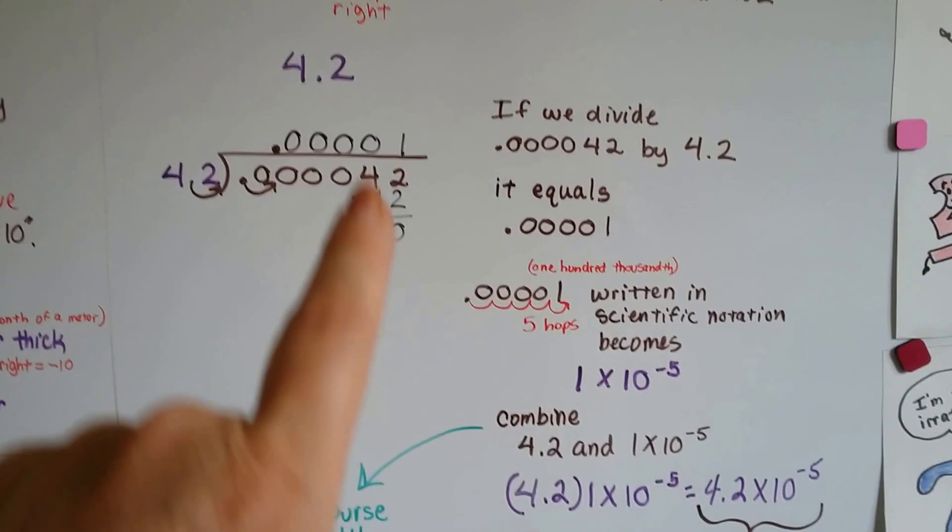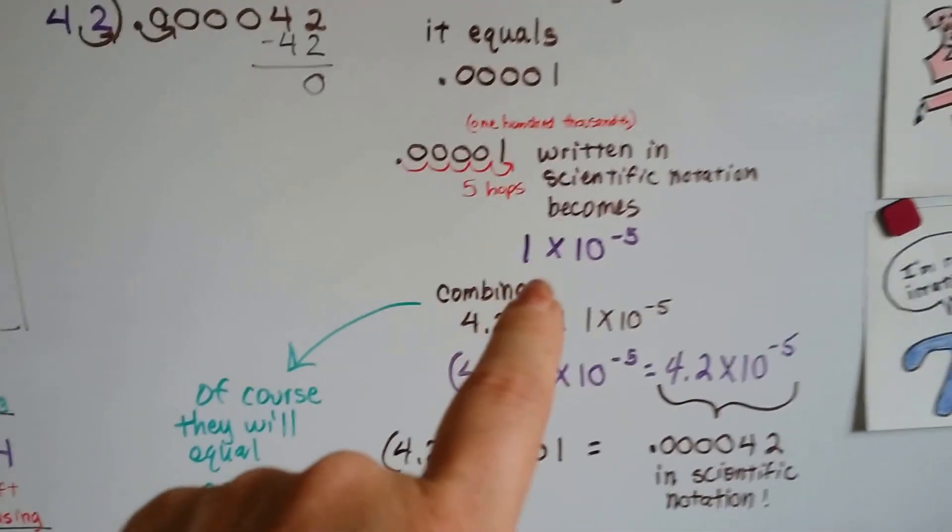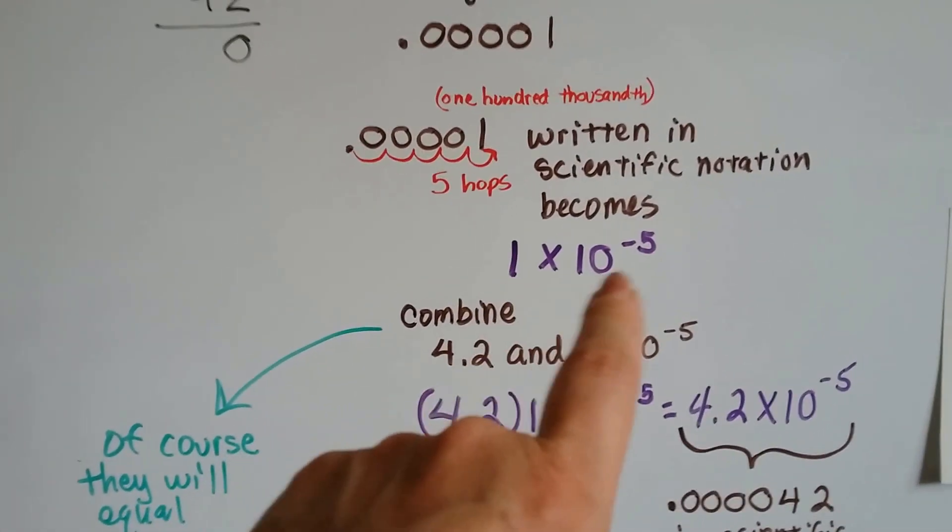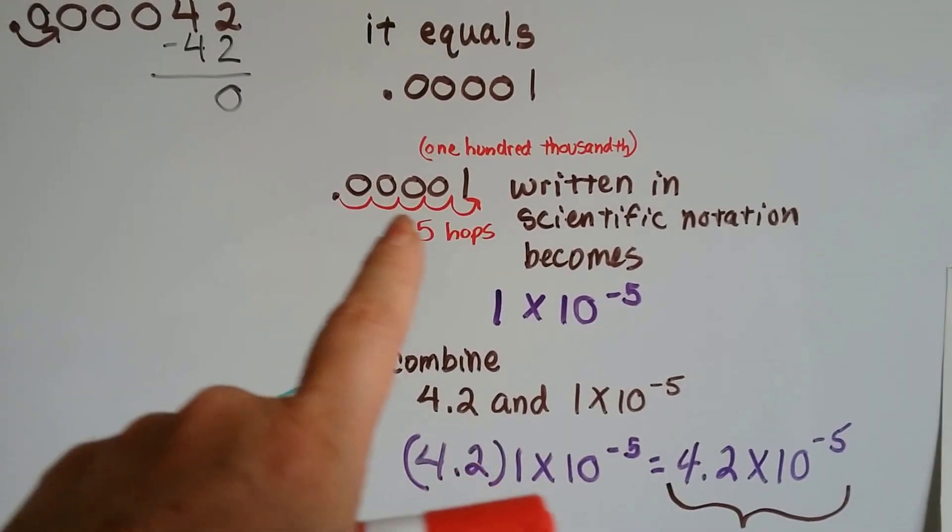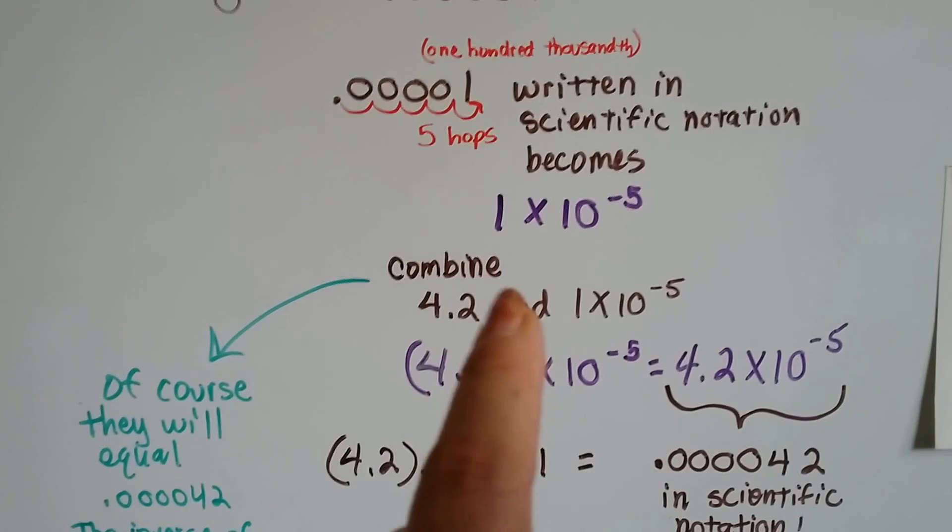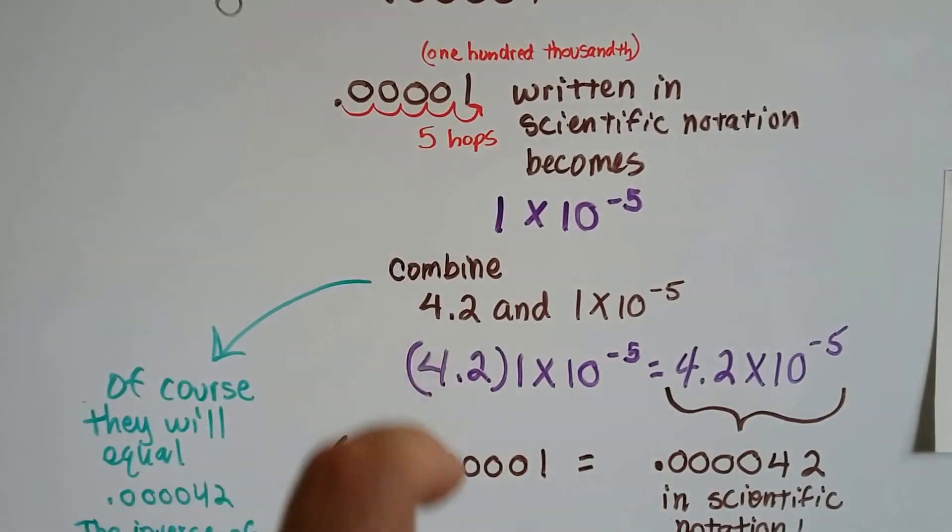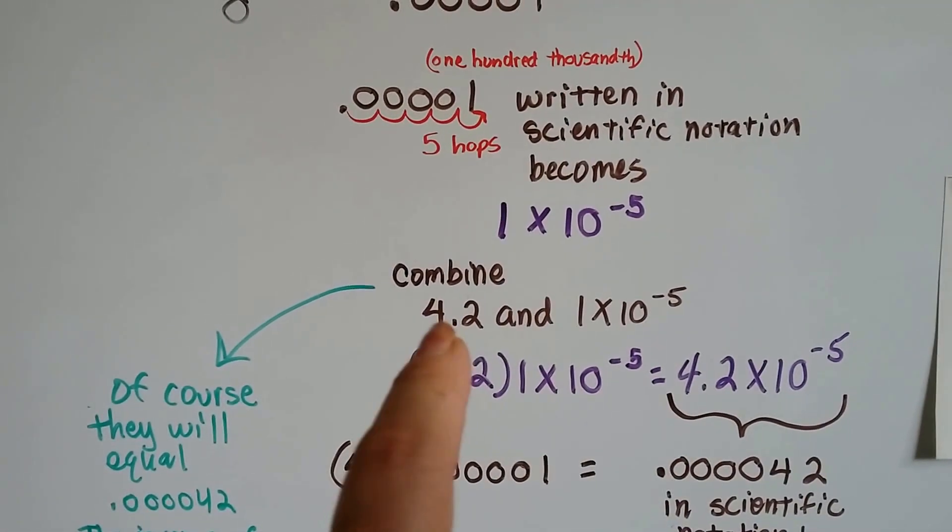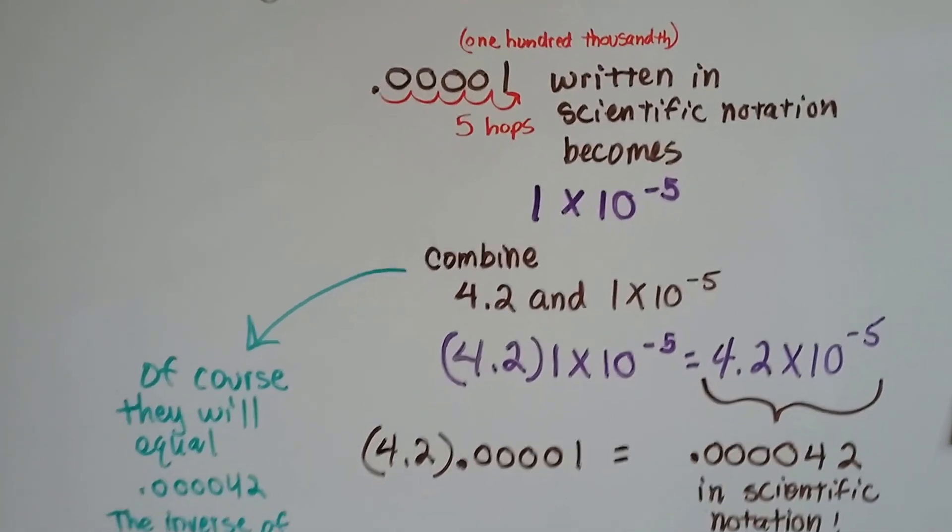We do the division, and we come up with 100,000th. Then it tells us to write that 100,000th in scientific notation, and that would come out to 1 times 10 to the negative 5, because we'd move that decimal place over behind the 1. Then it tells us to combine this number with the original number, or with the 4.2.